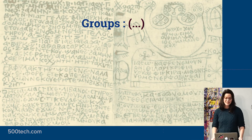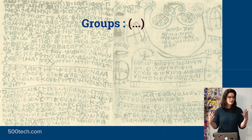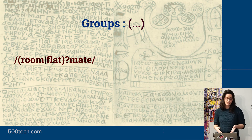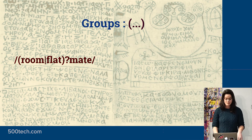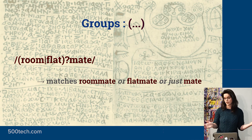The last one I'm going to talk about is groups. If you put things in parentheses, it groups them together so you can throw special instructions on that group. In this instance, I'm going to use an OR operator and put the optional special character on it. So this will match 'roommate', 'flatmate', or just 'mate', because both parts in the group are optional.